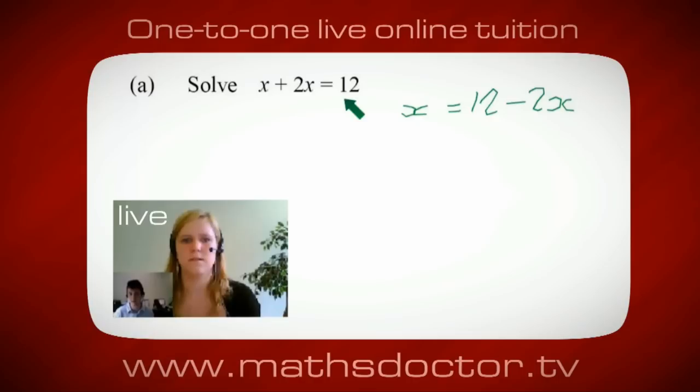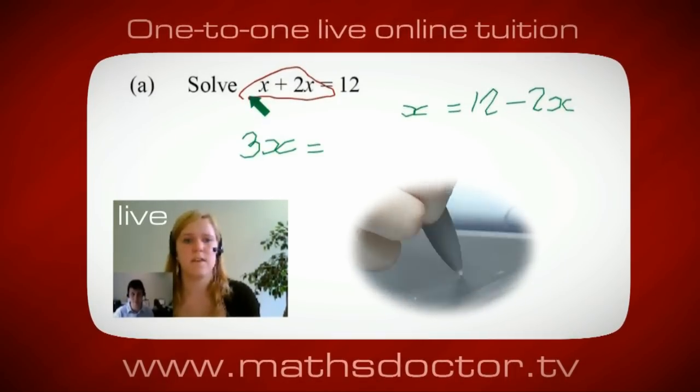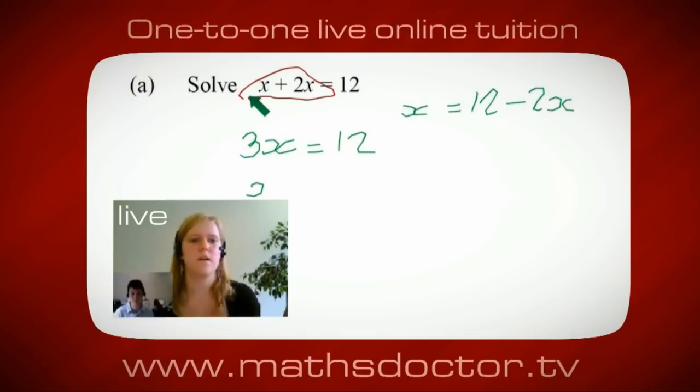Okay, so a lot of the time we want to get x by itself, but what we want to do first is get all of these x's together. So can you see anything we can do with this? Get all these together in one place. Oh, okay, it's 3x, isn't it? Yeah, absolutely. So 3x equals 12. Oh, and so x equals 4. Brilliant. Spot on. Well done.